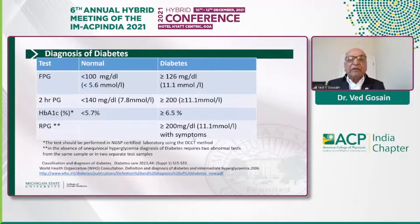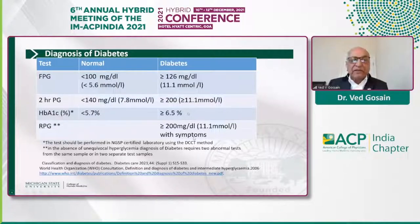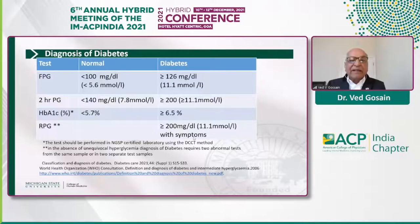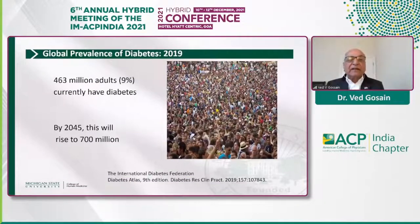These are the criteria we currently use for making a diagnosis of diabetes — well established, and I won't read through all of them. But I will make two points: if you're going to use hemoglobin A1c for making a diagnosis of diabetes, the test must be done in a standardized certified laboratory. And in the absence of unequivocal hyperglycemia, diagnosis of diabetes requires two abnormal tests from the same sample or two different samples.